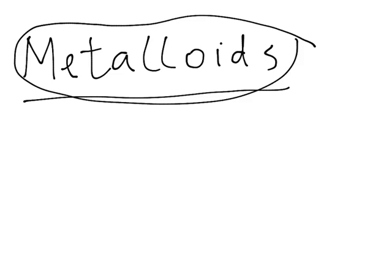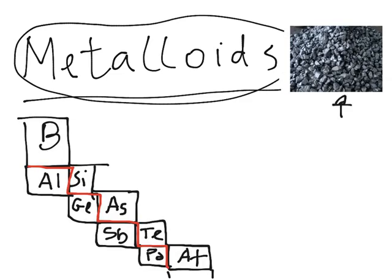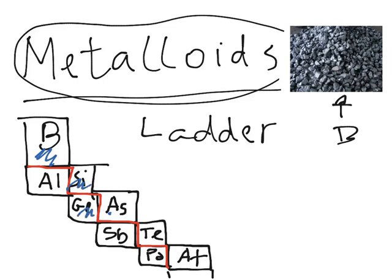An example of a metalloid is boron — this is how boron looks. This is the ladder of the metalloids in the periodic table. To identify metalloids, you should memorize this ladder — the red color shows how the ladder goes. The main metalloids, highlighted in blue, are boron, silicon, germanium, arsenic, antimony, and tellurium. Those are the six main metalloids. However, polonium and astatine are considered metalloids by some but not others — it really depends on your periodic table. Aluminum is rarely considered a metalloid, but sometimes it is, so you should know that.